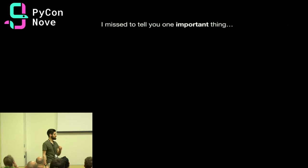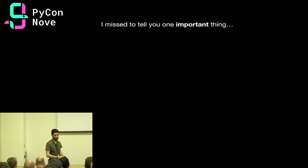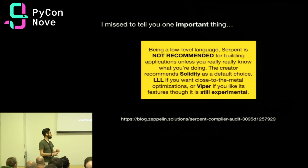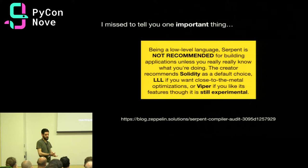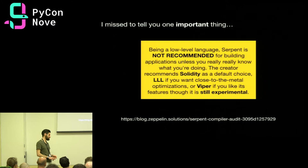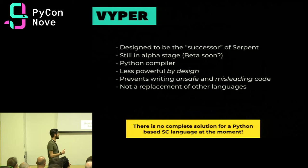I've been talking about Serpent as the Python alternative, but there's one problem: it is no longer recommended by the community. It hasn't received much attention lately, it lacks documentation, it's not secure, it has a bunch of problems, and it gets really annoying when you want to develop complex smart contracts. So there's an alternative, which is a work in progress, called Viper.